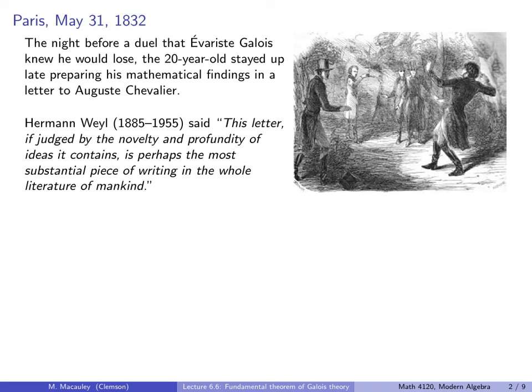Now of course he's a little bit biased, and I'm sure there are some scholars in literature or philosophy who would love to disagree, but that is neither here nor there. The point is that a 20-year-old kid came up with some of the most impressive mathematical ideas in the whole history of mankind.